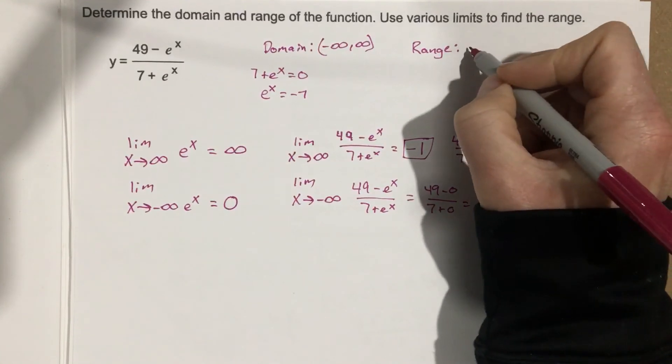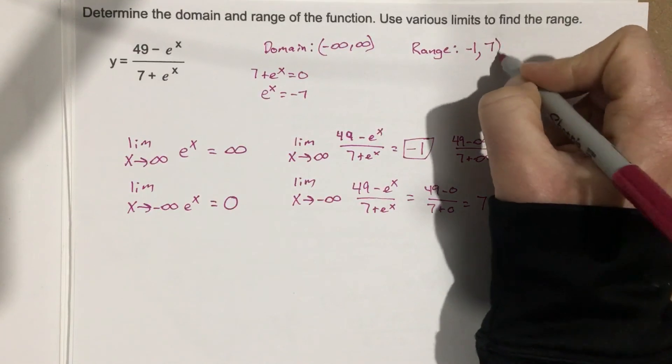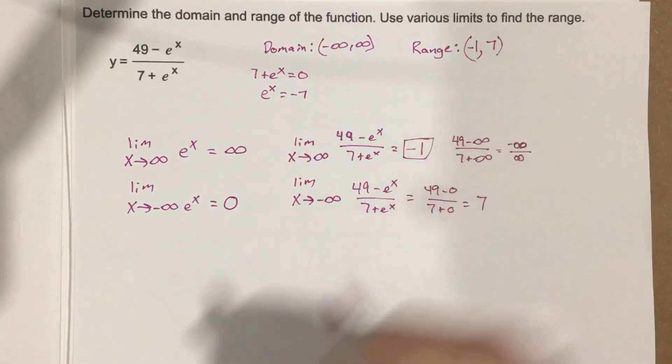So what's our range then? Our range goes from negative 1 to 7. But it never hits either one.